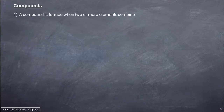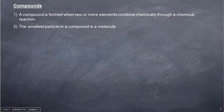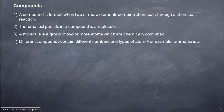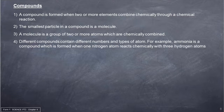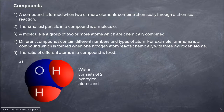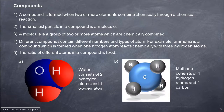A compound is formed when two or more elements combine chemically through a chemical reaction. The smallest particle in a compound is a molecule. A molecule is a group of two or more atoms which are chemically combined. Different compounds contain different numbers and types of atoms. For example, ammonia is formed when one nitrogen atom reacts chemically with three hydrogen atoms. The ratio of different atoms in a compound is fixed — for example, water consists of two hydrogen atoms and one oxygen atom, and methane consists of four hydrogen atoms and one carbon atom.